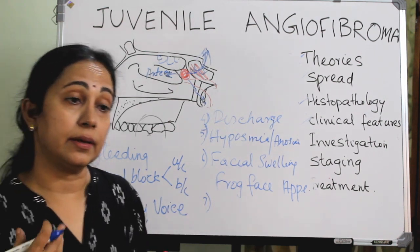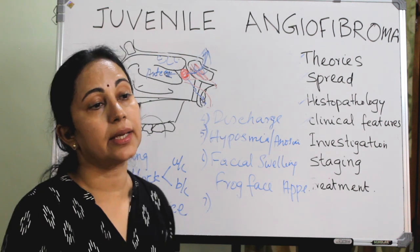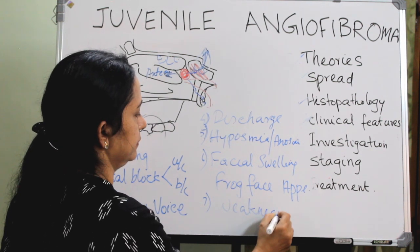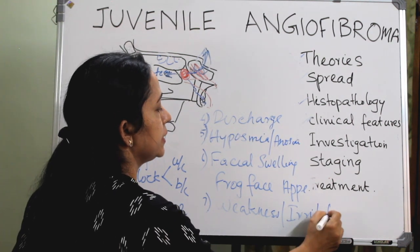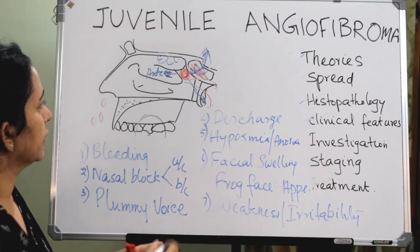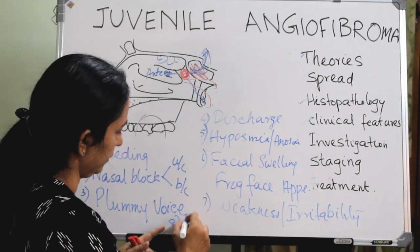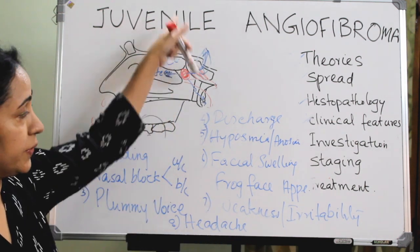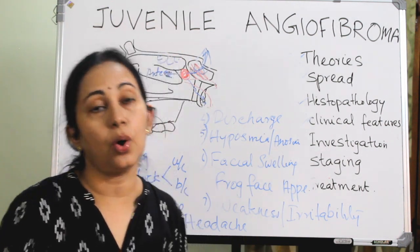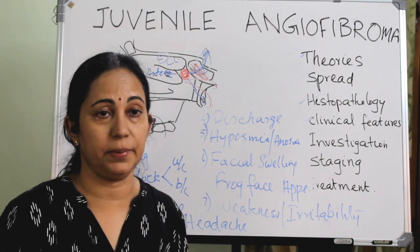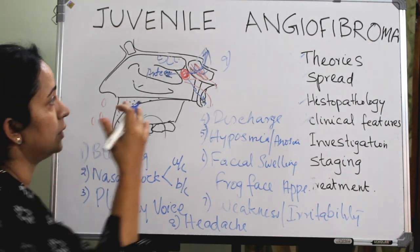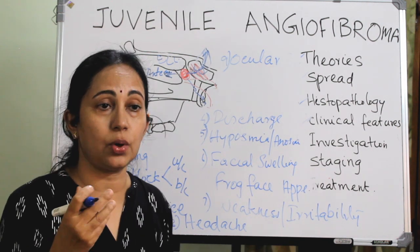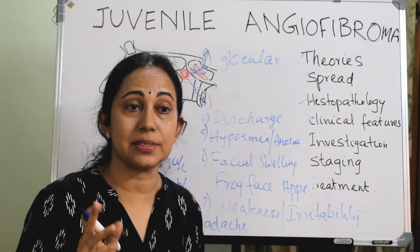As the patient has repeated nasal bleeding, anemia develops, along with irritability and weakness due to impaired nasal breathing. Headache can occur due to weakness, sinusitis, or intracranial involvement. If the tumor extends to the orbit, it can cause proptosis, visual loss, or diplopia if the extraocular muscles are involved.